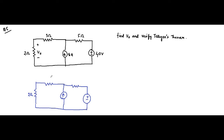Redrawing the circuit: we have a 2Ω, 3Ω, and 5Ω resistor, an 8 ampere current source, and a 40 volt voltage source. Let us assign current directions — this current is I1, this current is I2. This node voltage is V. Applying KCL at that particular node.